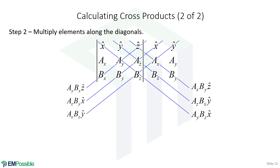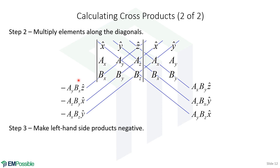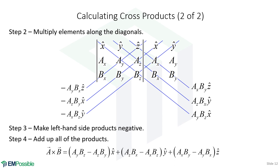After computing the six diagonal products, we make the three products from the left-leaning diagonals negative, then add all six terms together — that sum is the cross product. So the method is: draw the augmented matrix, multiply along the diagonals, make the left-side diagonals negative, and add everything together.